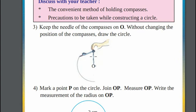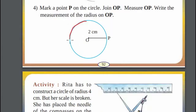Now, keep the sharp needle of the compass on the point O that we had drew earlier. Then, without changing the position of the other end, draw a circle around the point O. Here, we have constructed a circle using compass of radius 2 cm.